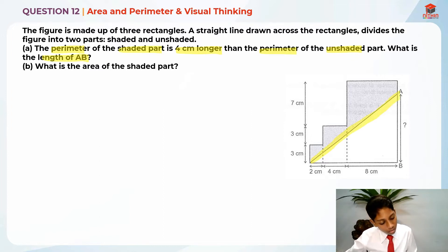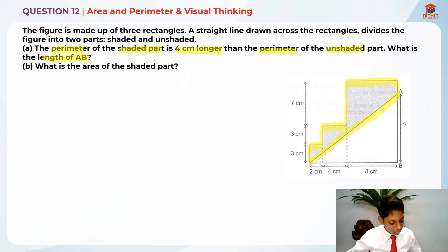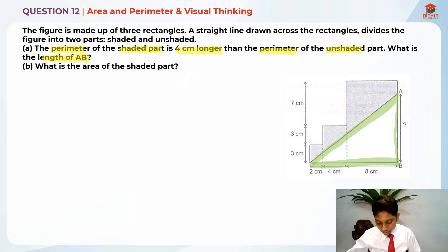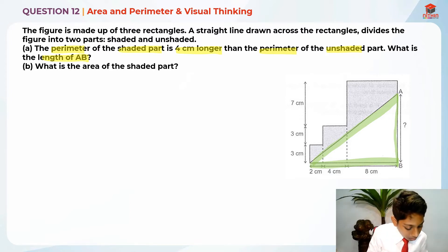Let me draw the outline of the shaded part perimeter first. This is the perimeter of the shaded part, and here is the perimeter of the unshaded part shown in green. Before that, I'm going to simplify this figure for you — a method my teacher taught me in primary school. Basically, in order to make the perimeter of the shaded part easier to compare, I'm going to make this whole figure into one big rectangle.